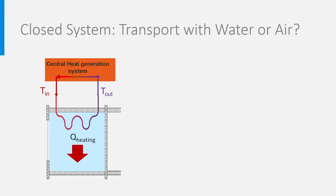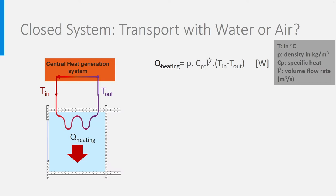To make a choice between water and air as the transport fluid for heat and cold, we need to consider the size of the transport ducts. Let's start with a closed system and consider heating — it works exactly the same for cooling. In a closed system, a fluid is heated by the heat generation system (a boiler, for instance) and circulated through a pipe and a heat exchanger to the room. The fluid gives its heat to the room, heating it, then returns cooled to the heat generation system. The quantity of heat Q_heating is expressed as: Q_heating = ρ × Cp × volume flow rate × (T_in − T_out).